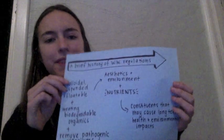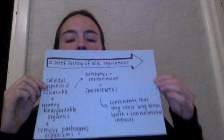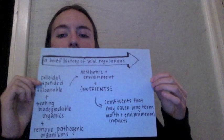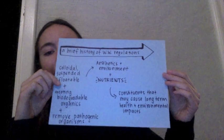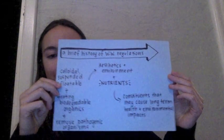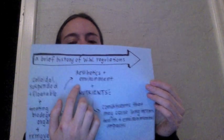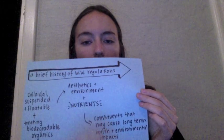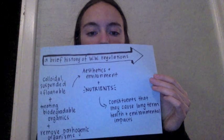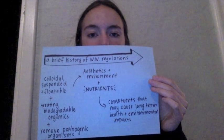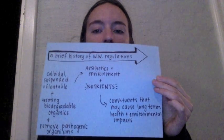So here's a brief history of wastewater regulations. Up until around the early 1970s, treatment objectives were concerned primarily with the removal of colloidal, suspended and floatable material, treating biodegradable organics and eliminating pathogenic organisms. Following this, there was a change in focus to aesthetics and the environmental impact. Earlier objectives were increased to higher standards and they included the reduction of biological oxygen demand, total suspended solids and pathogenic organisms.